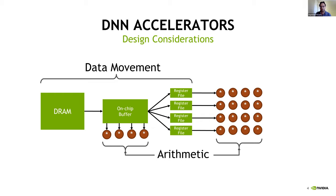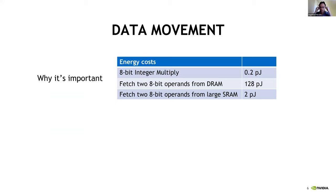Data movement is about bringing data in from your memory or storage devices to your arithmetic units. For the most part in this tutorial, we'll be focusing on data movement, although the tools are capable of measuring arithmetic activity as well. Most of the interesting trade-offs actually arise from the data movement aspect. There's a huge difference in energy between performing an 8-bit integer multiply and fetching the operands from storage elements such as DRAM or even a large SRAM — often an order of magnitude difference.